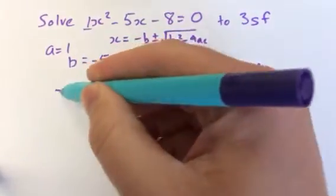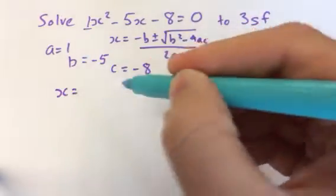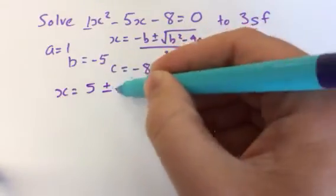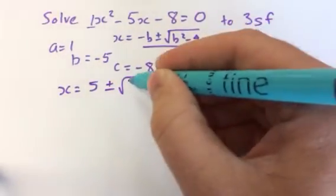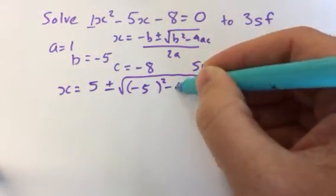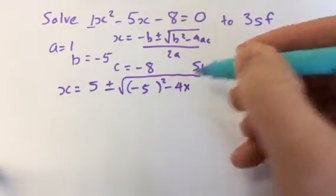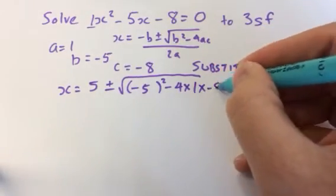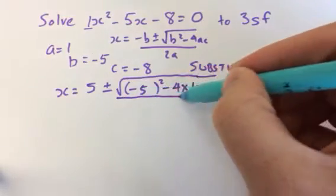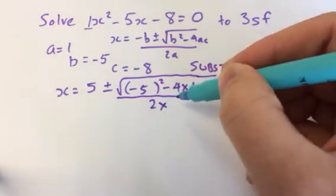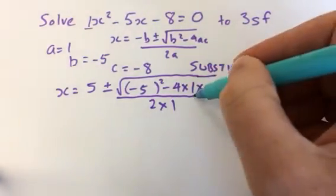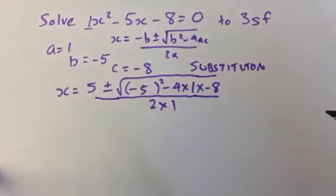Tell me what x is going to be then. It will be 5 plus or minus square root of bracket minus 5 bracket squared minus 4 multiply 1 multiply minus 8. Great, okay, so that's that. Over 2 multiply 1. Okay, so square root of b² minus 4ac.